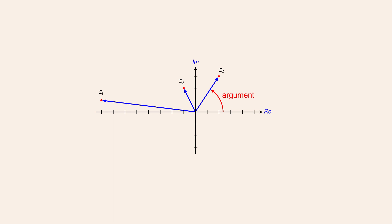The argument of a complex number is written as arg followed by the complex number in parentheses. The second parameter, called the absolute value or modulus of the complex number, describes the vector's length, defined as the distance from the origin to the point representing the number on the complex plane. The modulus of a complex number is written as that number enclosed in a pair of vertical bars, in the same way that the absolute value of a real number is written.